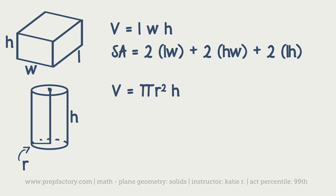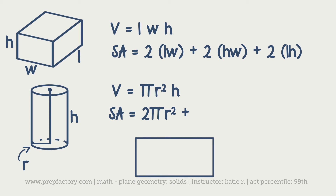For the outside of the cylinder, imagine peeling the label off a water bottle. When you cut down the label and stretch it out, it's just a rectangle. The height of that rectangle is the cylinder's height, and the width is the circumference of the circle. So for surface area, you take 2πr² and add height times 2πr — or π times the diameter.